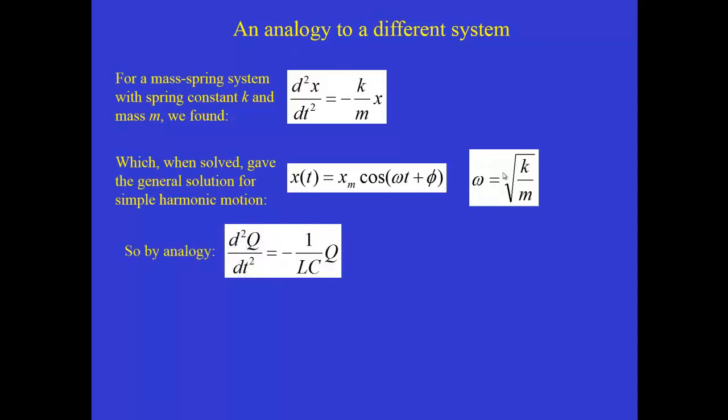So that constant out in front of the X, omega was the square root of that constant, apart from the minus sign. So by analogy, this is a great way to solve differential equations. When we have a differential equation for charge, in this case, we look at it and we say, we don't have to solve that all over again. We already solved an equation just like that, so we can use the solution that we obtained before and just replace the constants in order to get the solution of this equation.